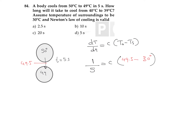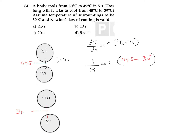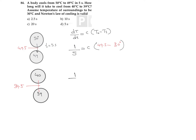In the second situation, the temperature of the object is changing from 40 degrees Celsius to 39 degrees Celsius. The average value is 39.5 degrees Celsius. Again applying Newton's law, the change in temperature is 1 and we need to find the time t. So: 1/t = c × (39.5 − 30), where 30 is the surrounding temperature.